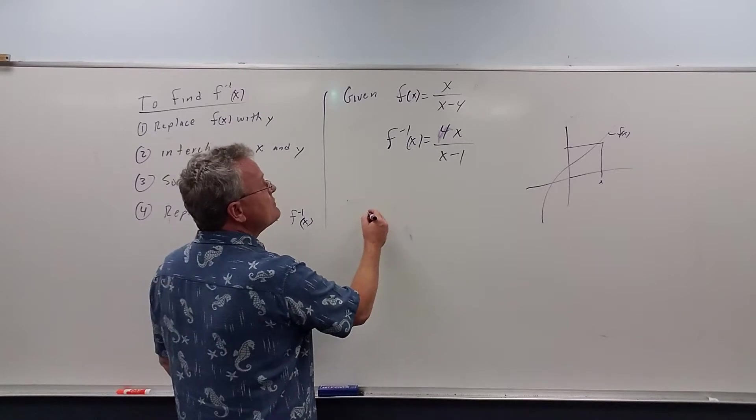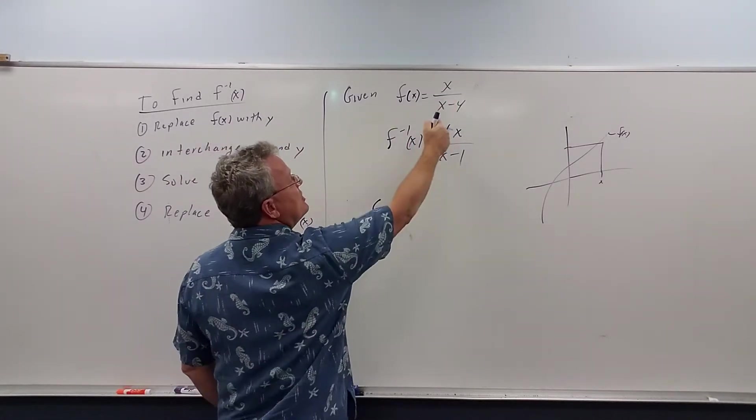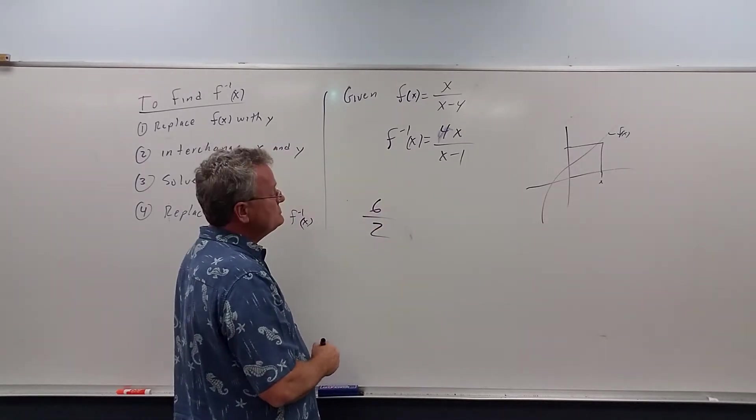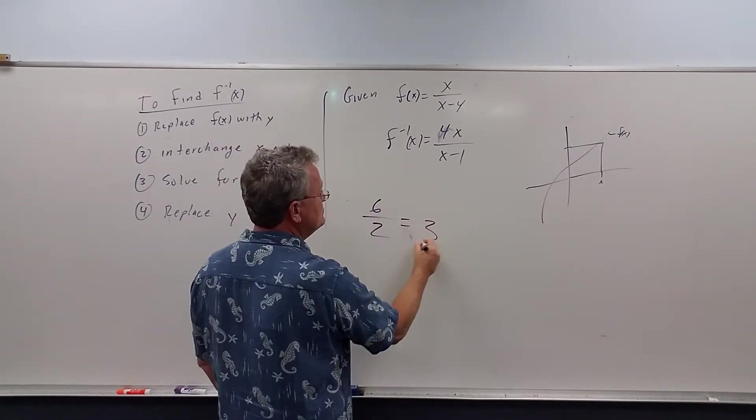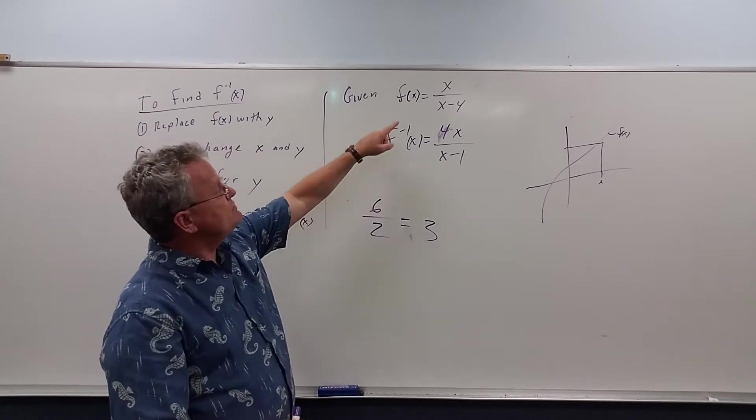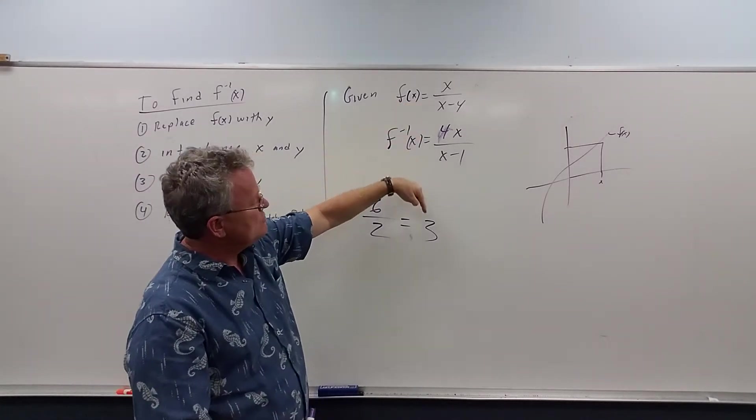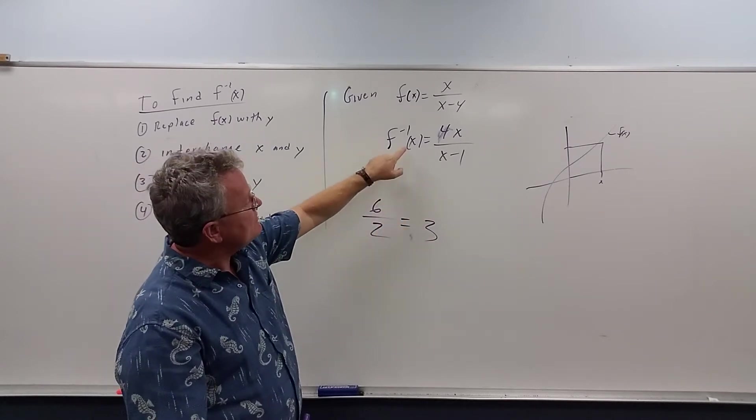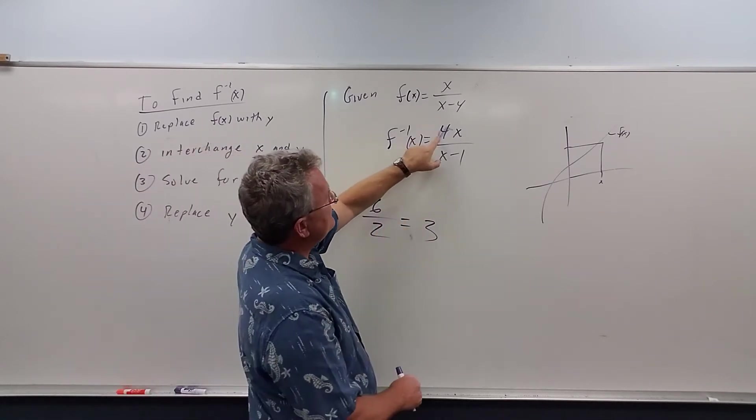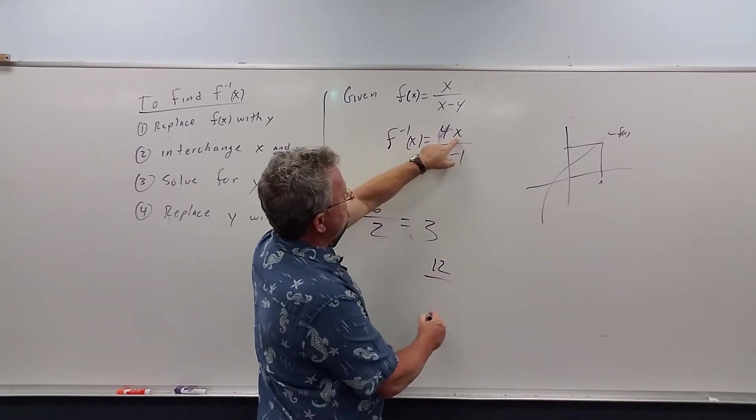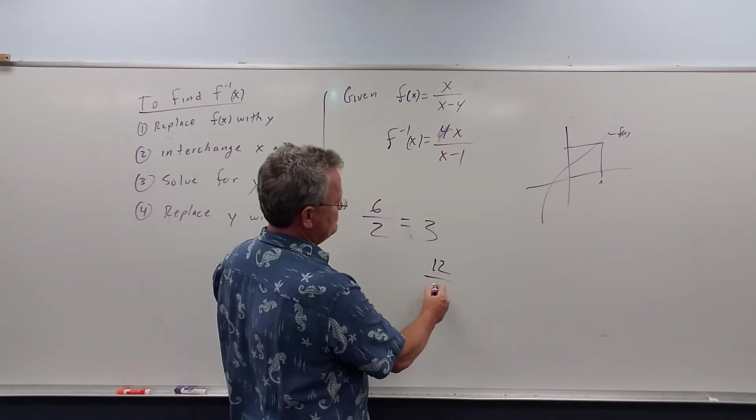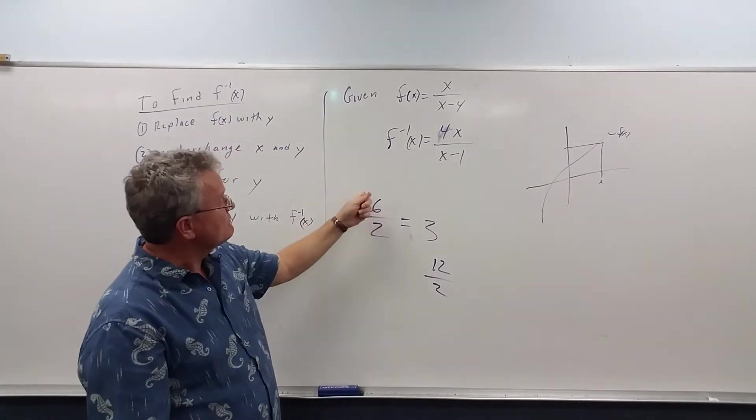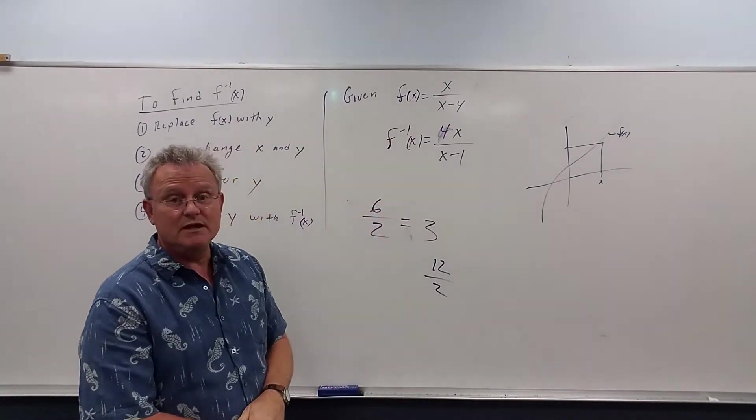So if x is 6, we get 6 over 6 minus 4. 6 minus 4 is 2, and 6 over 2 is 3. So when I plug in 6 into here, the y value that comes out is 3. When I plug 3 into the inverse, what do I get? 4 times 3 is 12, over 3 minus 1 is 2, and 12 over 2 is 6. That's the number that I plugged in here to begin with.